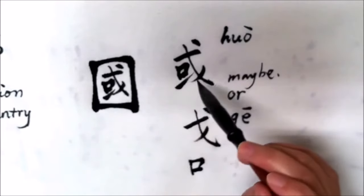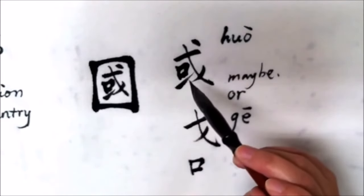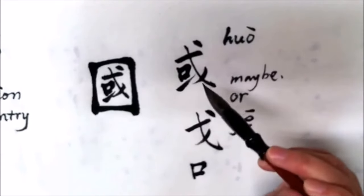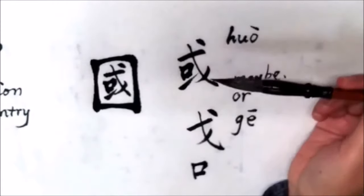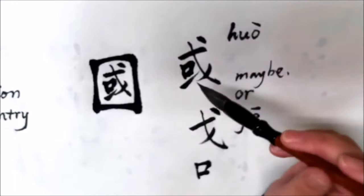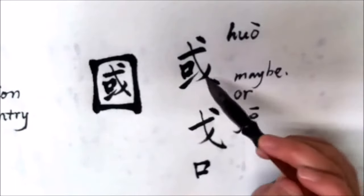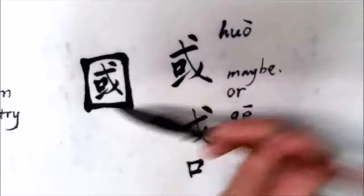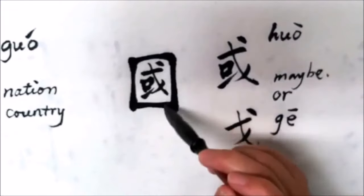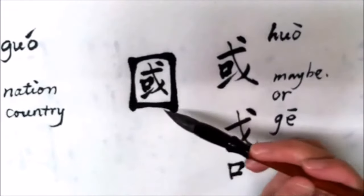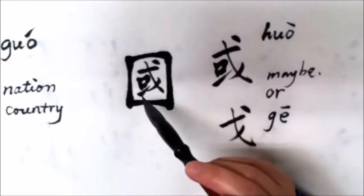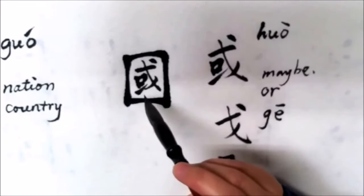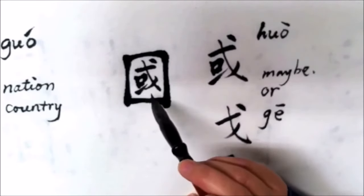Then 或 (huò) itself means a country. But as time went by, another border — the outside border — was added, and then we get this character, the traditional writing character.